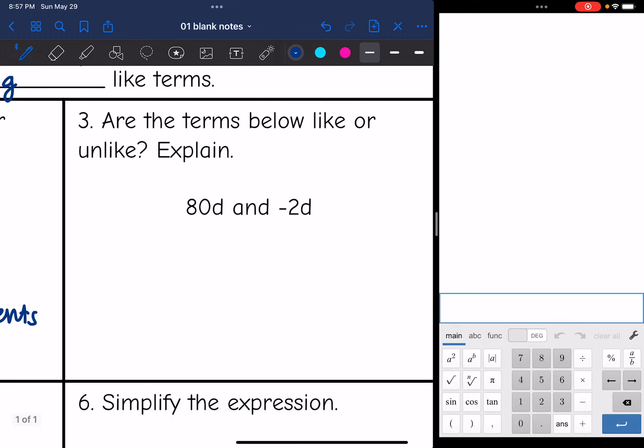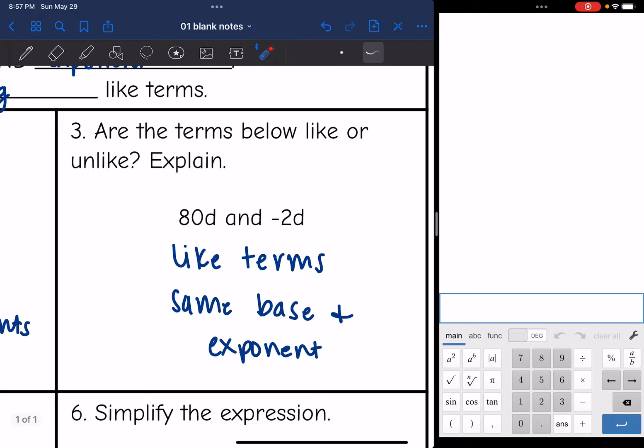All right, are these terms below like or unlike? 80D and negative 2D. These are like terms because they have the same base and exponent. There's no visible exponent on it, but these each have an invisible exponent of 1. So that's why they have the same base and the same exponent.